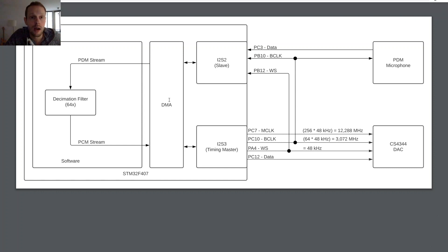Now let's look at the system setup on the STM32. The STM32 F407 has two SPI modules that work as I2S modules - I2S2 and I2S3. I will use I2S3 as the timing master, configured as a master device providing the master clock, bit clock, word select signal, and pushing data out to our external DAC. I2S2 is used as slave, requiring an externally provided clock signal. I made an external connection of the bit clock pin from I2S3 to I2S2, so this module also provides the clock for our PDM microphone.